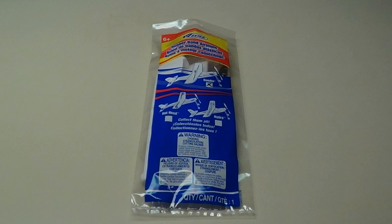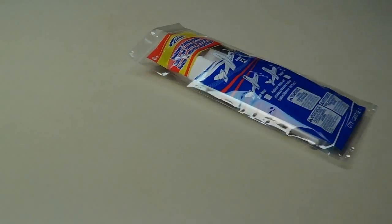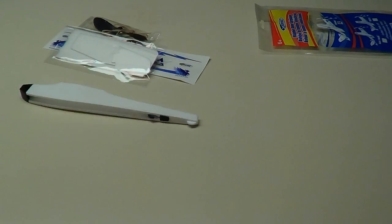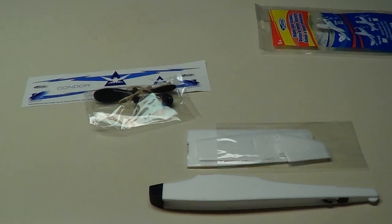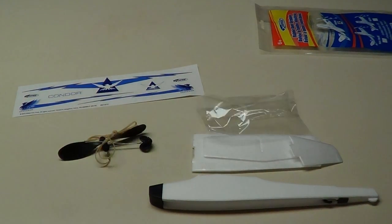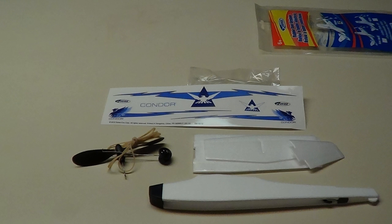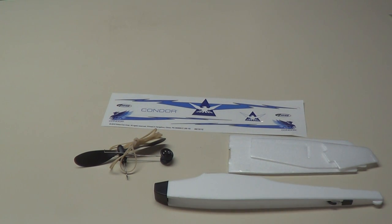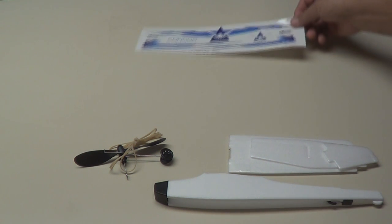Today we're going to build the Estes Condor rubber band powered plane. Here we got all the pieces laid out now. Let's see if we can put this little thing together. Now the directions are not real good. They're a little hard to read.